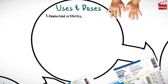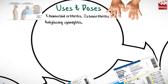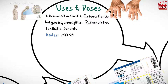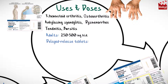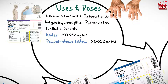Naproxen is used in the treatment of rheumatoid arthritis, osteoarthritis, ankylosing spondylitis, dysmenorrhea, tendinitis, and bursitis. In these cases, the usual dose for adults is 250 to 500 milligrams twice a day. When using delayed release tablets, it is 375 to 500 milligrams twice a day.